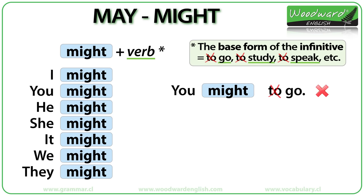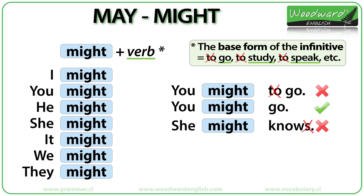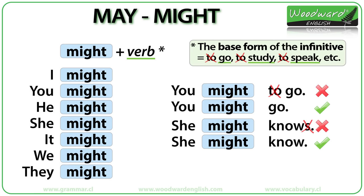For example, 'you might to go' is not correct — we don't use all of the infinitive, we need to remove the 'to' part. So we say 'you might go', which is correct. Similarly, 'she might knows' is not correct — we don't conjugate the verb, so no S is necessary. We need the base form of the infinitive, so we say 'she might know', which is correct.